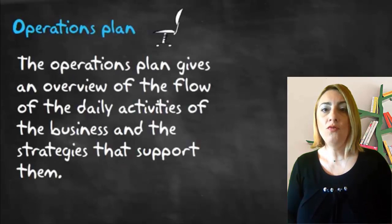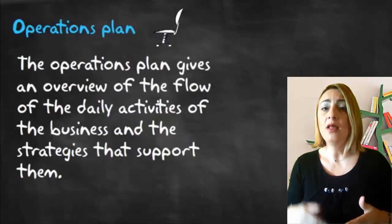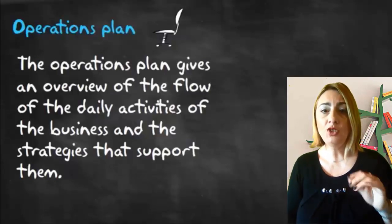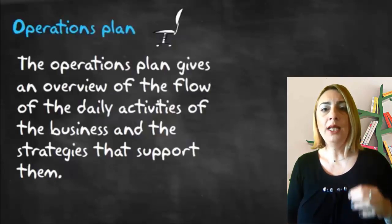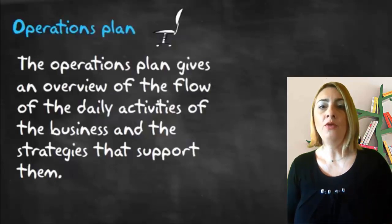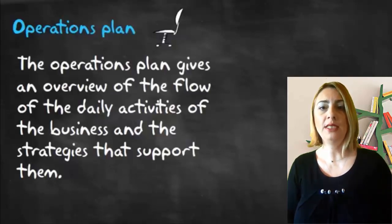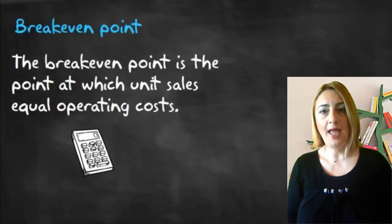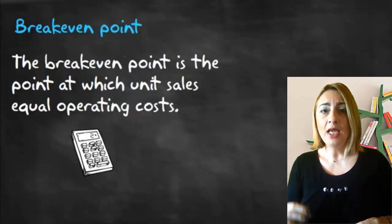The operations plan is an overview of the flow of daily business activities and the strategies that support them. There should be enough information to show the reader that you have planned for daily execution, but the plan should not be too technical or comprehensive. Its primary purpose is to show that you are focused on the critical operating factors. In this part, you should also calculate the break-even point — the point at which unit sales equal operating costs — identifying when the business will begin to make money.